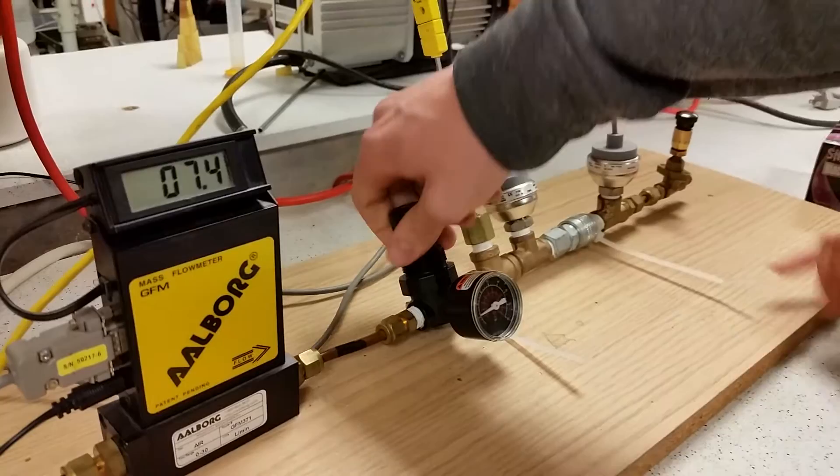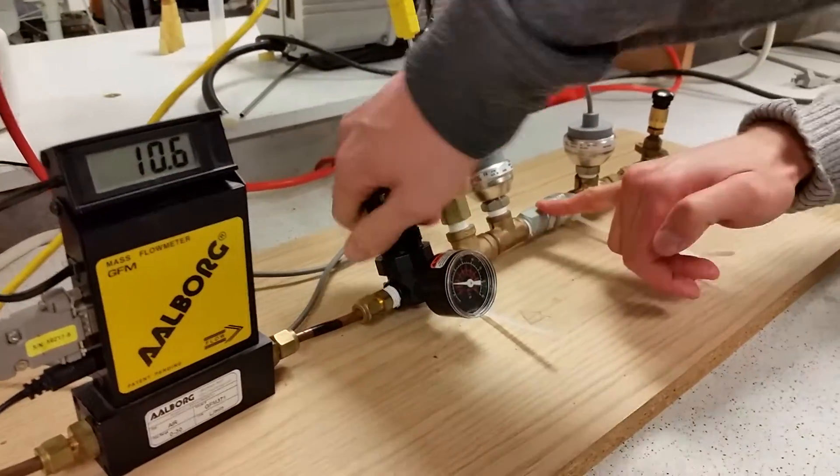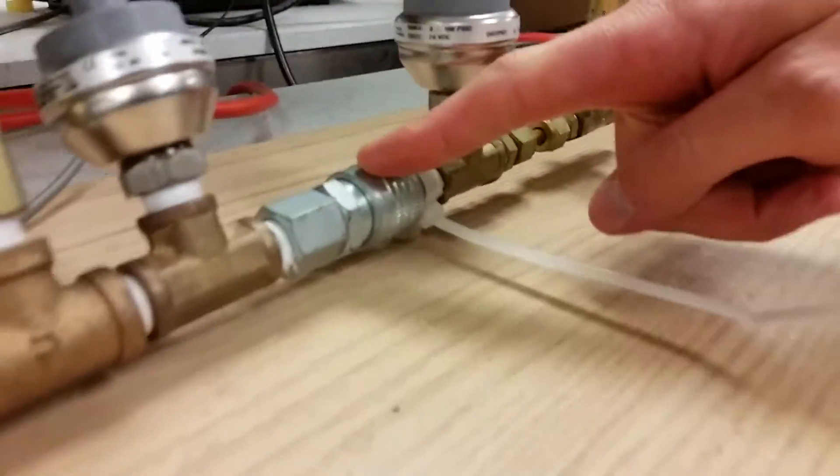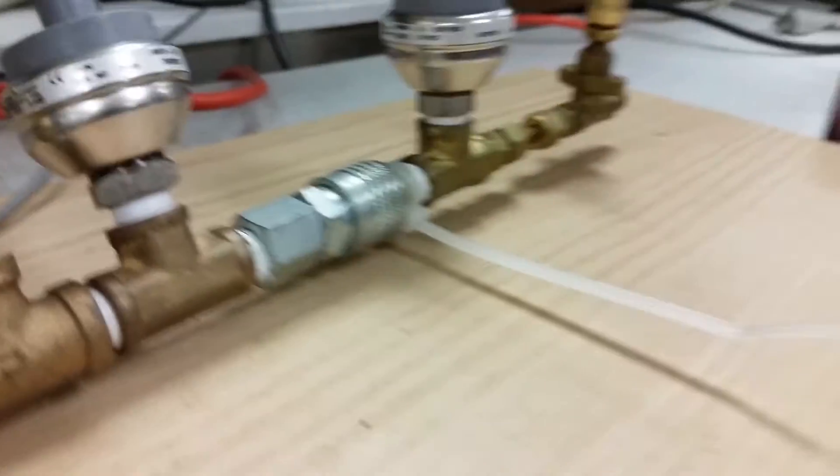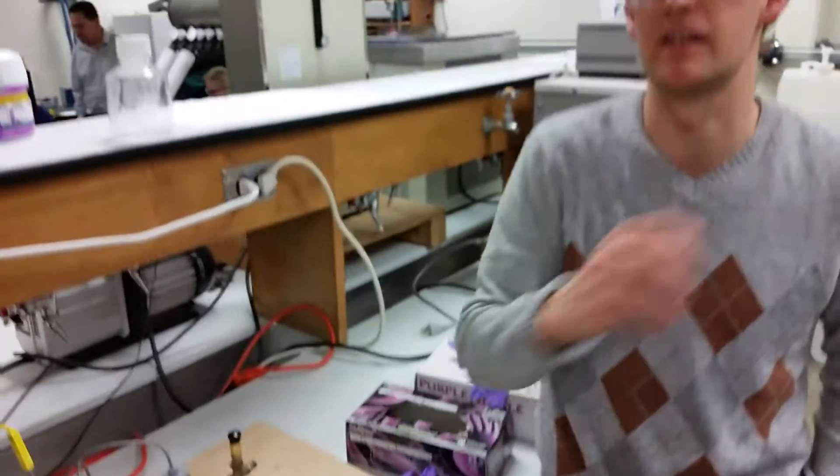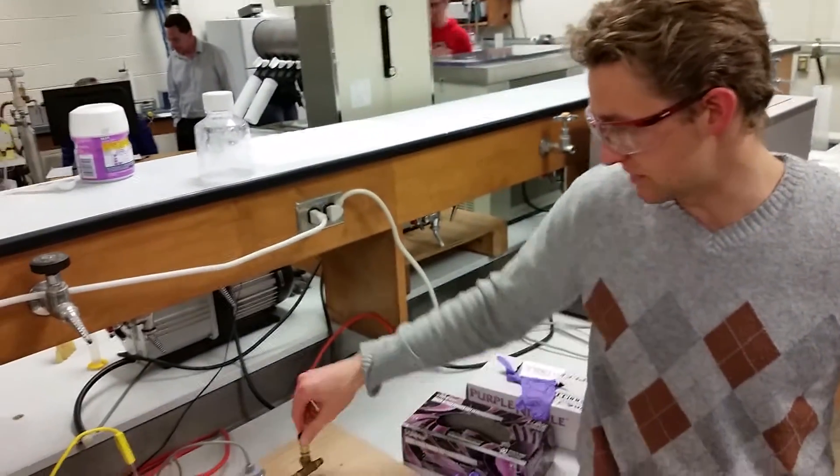So the reason why it's choked flow is because the air flows through this orifice, which is a square edge. That's what we've been told. We've never seen it, but it's a square edge, one millimeter in diameter. We had to look that up, so that's good to know.